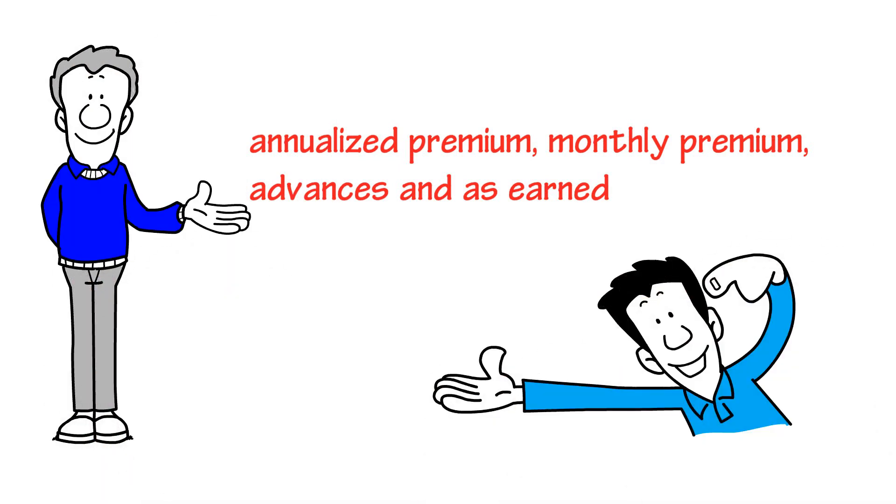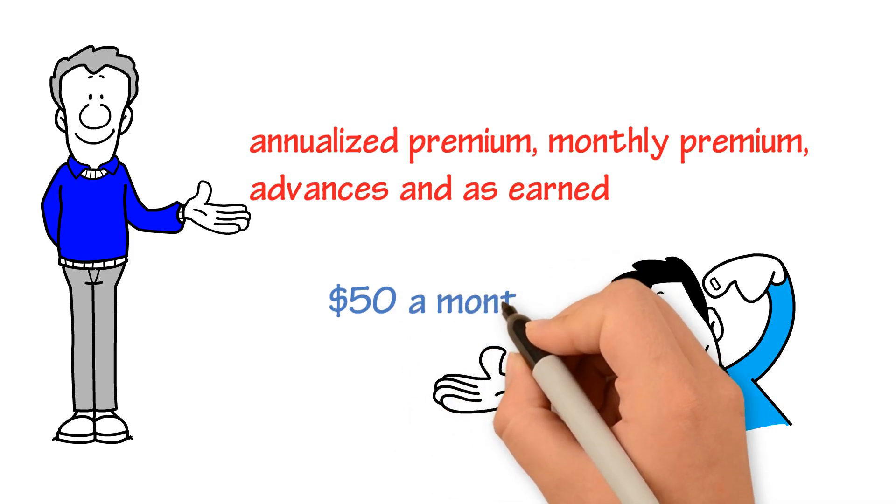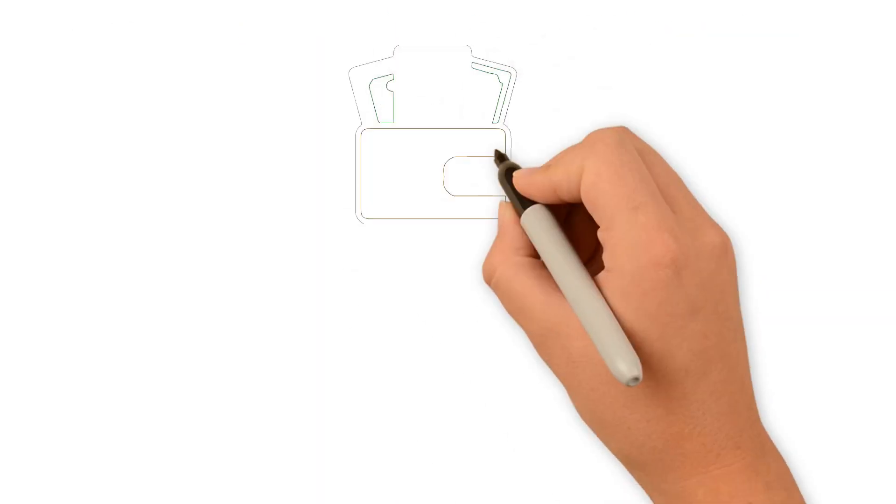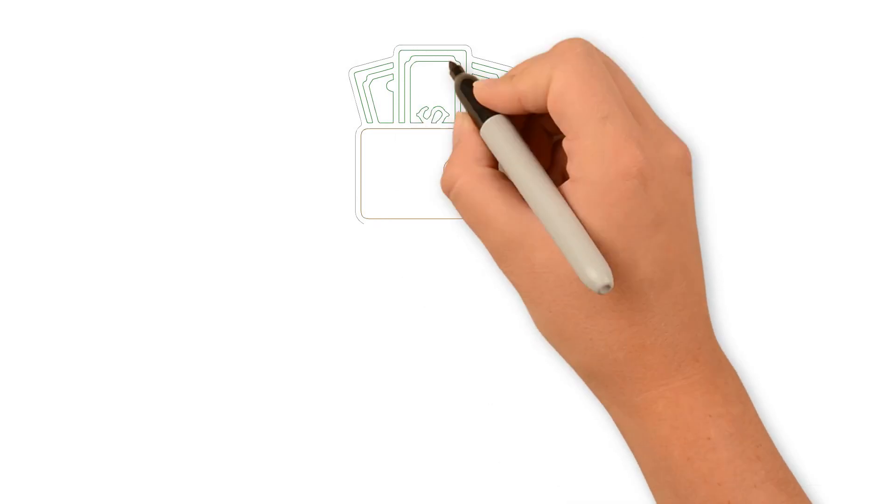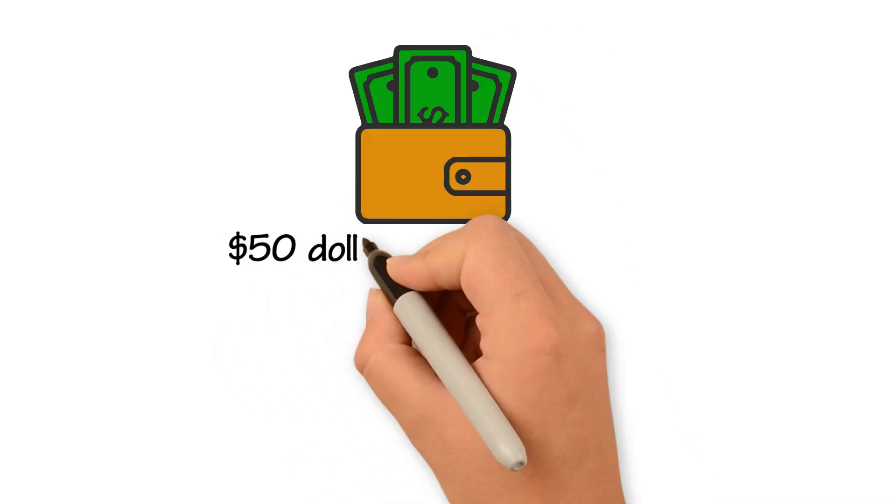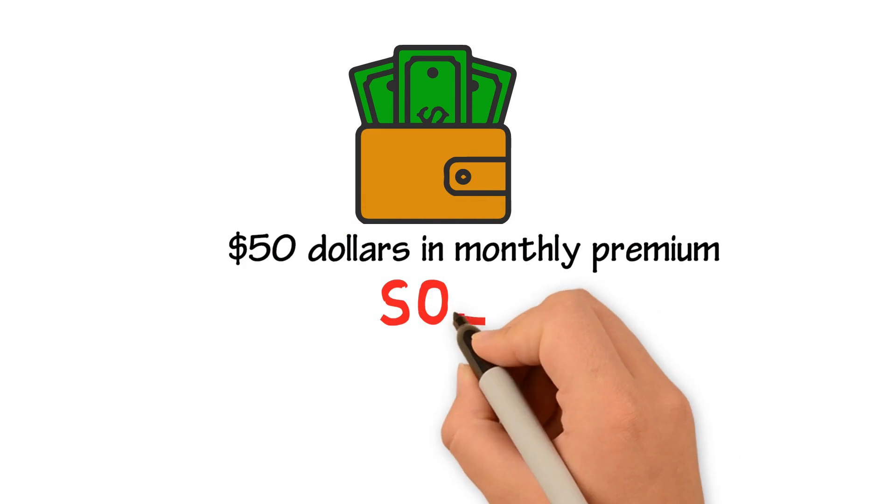Okay, so let's say you just sold the client a policy for $50 a month. Great job! Now you're wondering, what does that mean for me and my wallet? Well, this means you have $50 in monthly premium from the policy you just sold.